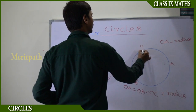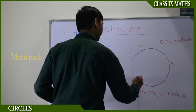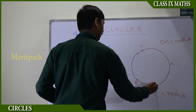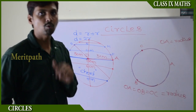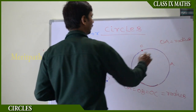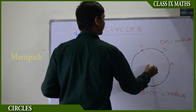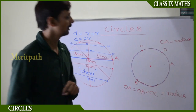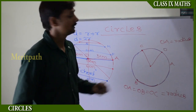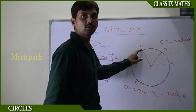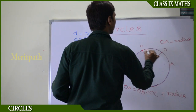Starting from a point on the circle, if you rotate along the circle back to that particular point, this is called the circumference of the circle. From this point, we take any other point, and that point is called the center of the circle. When we join two points from the circle — from a point on the circle to the center (radius) and then from the center to another point on the circle — the region formed is called a sector.